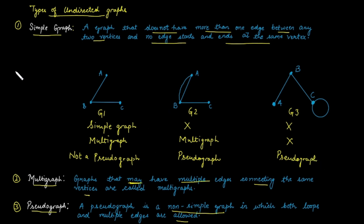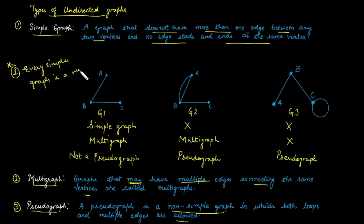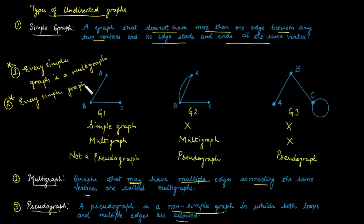From here we have two main results. The first result is that every simple graph is categorized as a multigraph — every simple graph is a multigraph. The second result says that every pseudograph is a non-simple graph, or equivalently, every simple graph is not a pseudograph.